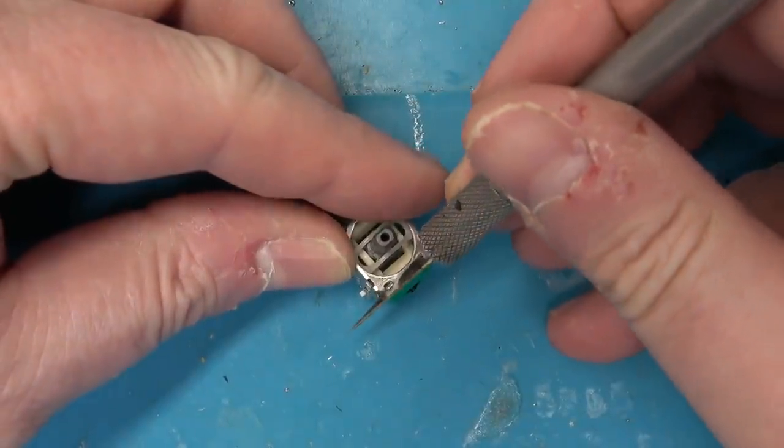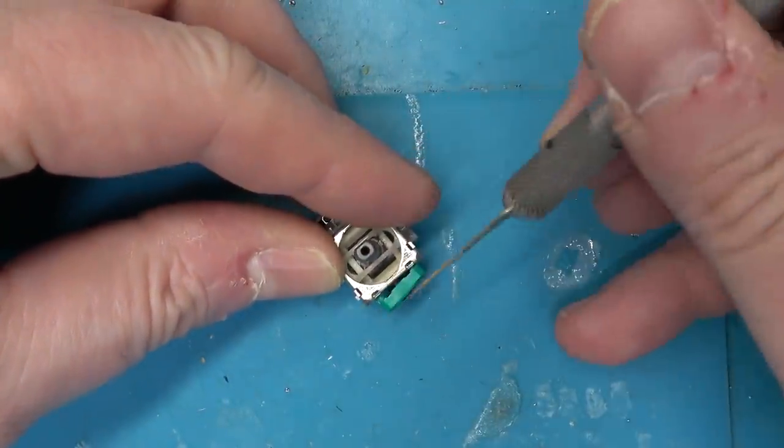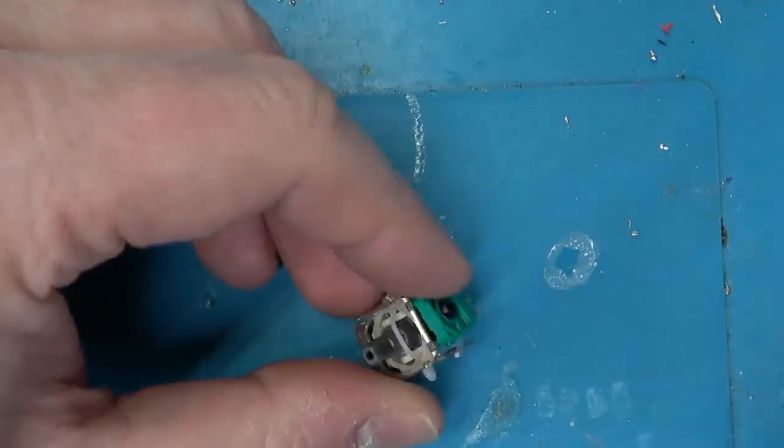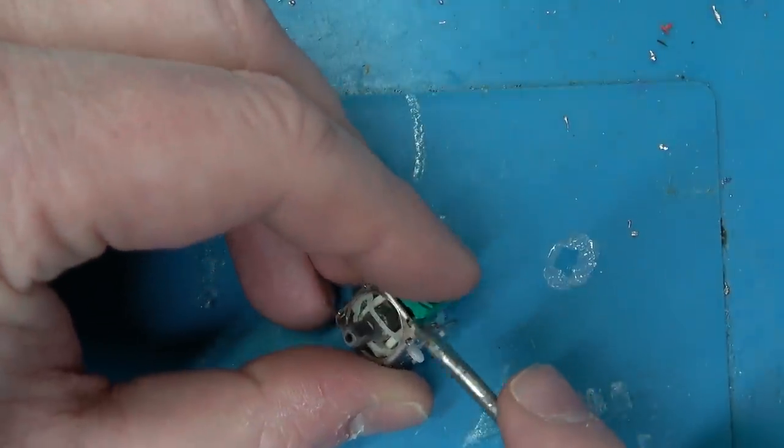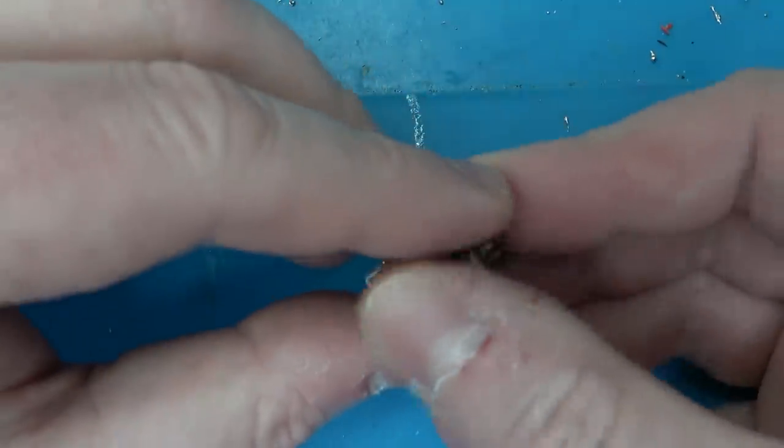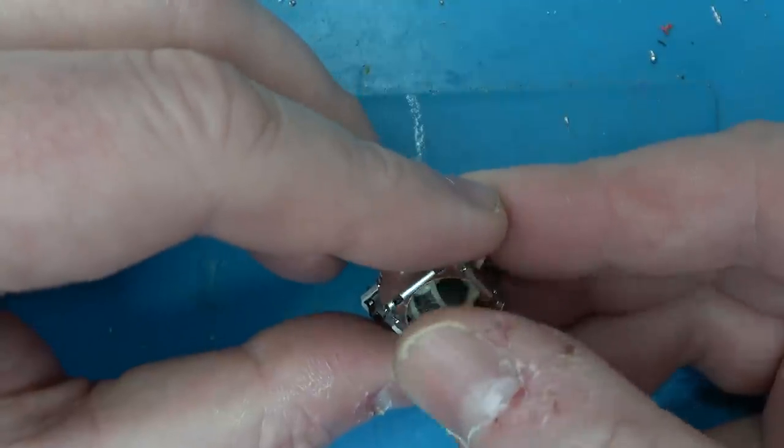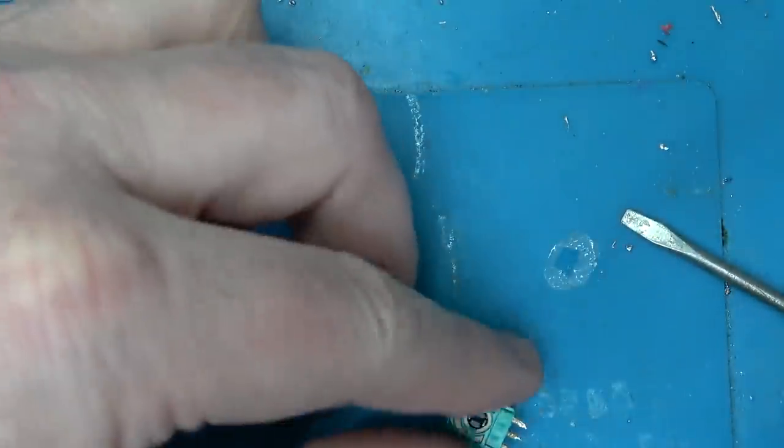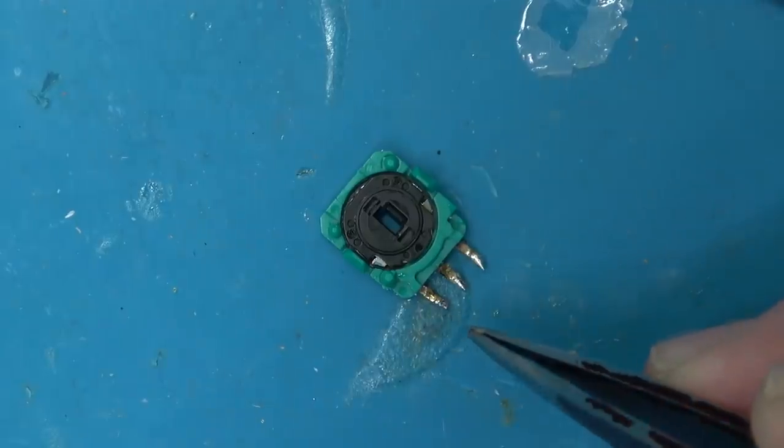I'm going to take an X-Acto knife. I'm going to pry in there. Gently. It's just tabbed in place. All right. So this should be fine. Feels good. I mean, I guess you can put a different spring in it, but I'm sure it's fine.